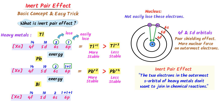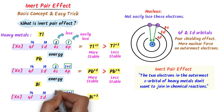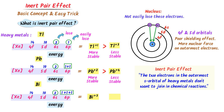Bismuth can easily lose the three electrons in the 6p orbital to form the bismuth +3 ion. On the other hand, we need to provide energy to bismuth to lose the two electrons of the 6s orbital to form the bismuth +5 ion. Therefore, bismuth +3 ion is more stable and bismuth +5 ion is less stable, due to the inert pair effect. Remember: the reluctance of the two 6s electrons to participate in chemical reactions is the inert pair effect.